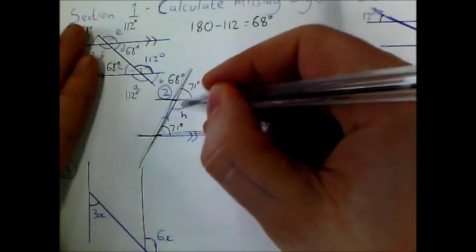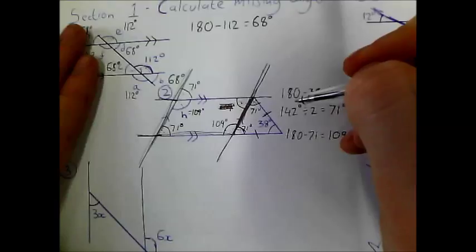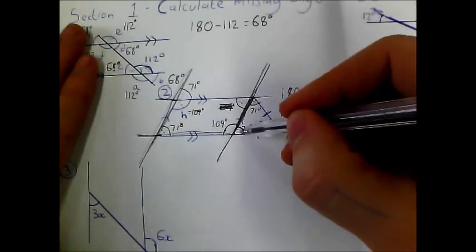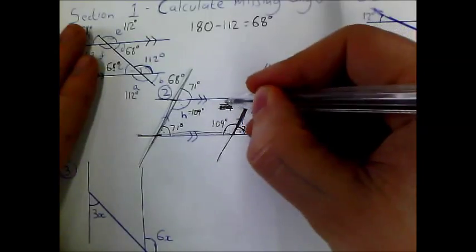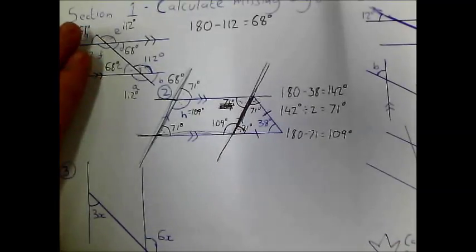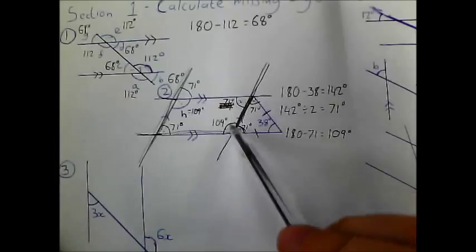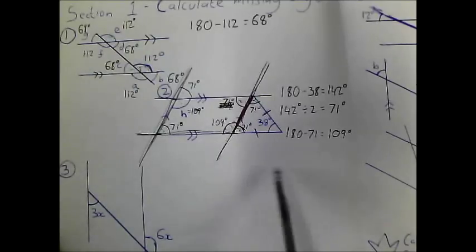Therefore this is 180 take away 71, which we already know is 109 degrees. And likewise, this angle is alternate to this one, so this one is also 71 degrees. You could have just used the fact that opposite angles in the parallelogram are equal.